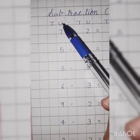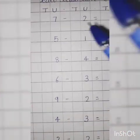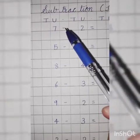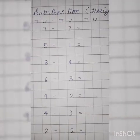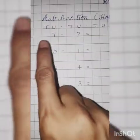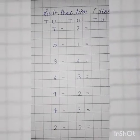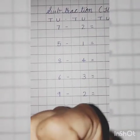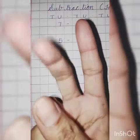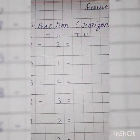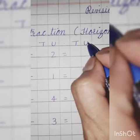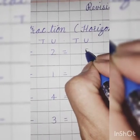Now, 7 minus 2. Throw 2. Count till 7. What comes after 2? Finger out: 3, 4, 5, 6, 7. How many fingers are left? 1, 2, 3, 4, 5. So, answer is 5. Write down 5 under units.